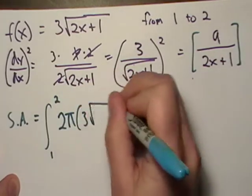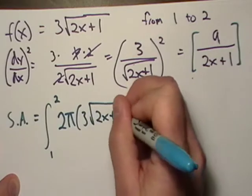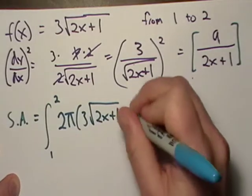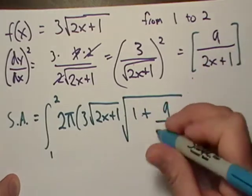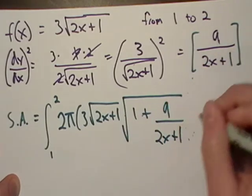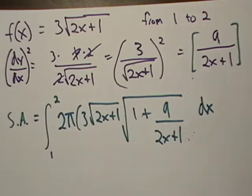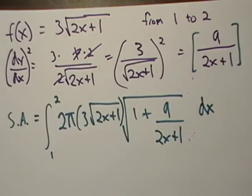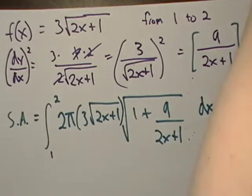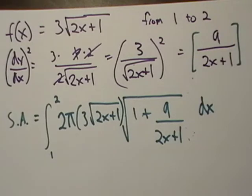And I get 2π f(x). That's 3√(2x+1), and then it's 1 + 9/(4(2x+1)). Man, that marker is really bleeding through. I don't know if I really like that a whole lot because it causes you guys to not be able to see it as well.